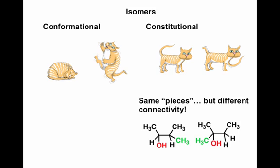And on the right, we have constitutional isomers. Here, we've switched the position of a tail and a foot. These two cats are made of the same pieces — four legs, a head, and a tail — but the connectivity is completely different.